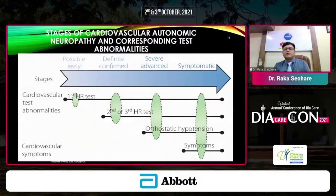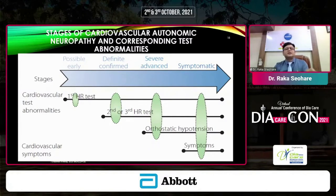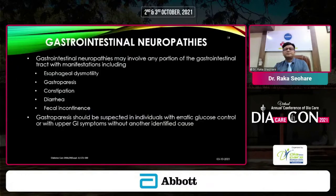Orthostatic hypotension represents the more severe and advanced symptomatic stage of cardiac autonomic neuropathy. The staging cascades from possibly early to definitely confirmed to severely symptomatic.